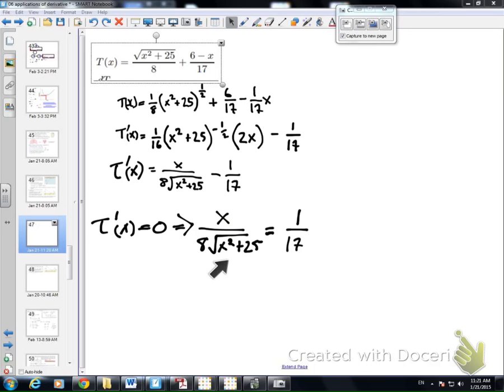The thing that's giving me the most trouble is this guy right here, the square root and all that. To make that go away, I'm going to square both sides. So we square the x, we square the 8, we square the square root, and we square 1, and we square 17.